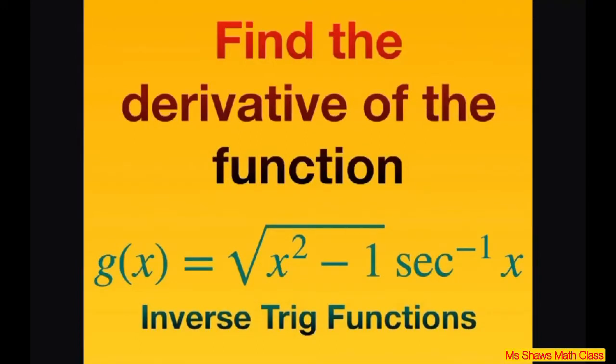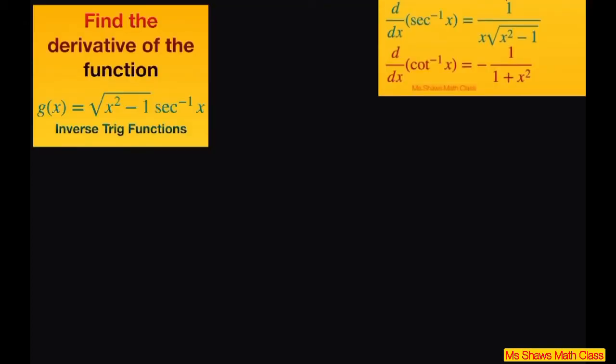Hi everyone, we're going to find the derivative of the function g(x) equals the square root of x squared minus 1 times inverse secant of x. We're going to use the formula for differentiation for inverse secant here.